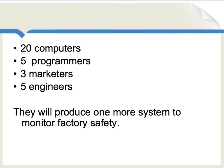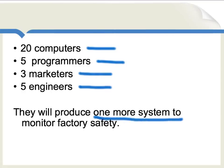Let's say that to develop the new computer system, what's needed are 20 computers, 5 additional programmers, 3 marketers to help sell the system to factories, and 5 engineers to hold the whole thing together. When combined, these inputs will produce exactly one more system to monitor factory safety. But should this investment be undertaken? Here's where the socialist calculation debate comes in. If all you do is list the inputs and outputs and you have no access to market prices, we really don't have a good idea whether this new system is cost effective — it may be costing far more resources than we'll get back in return.